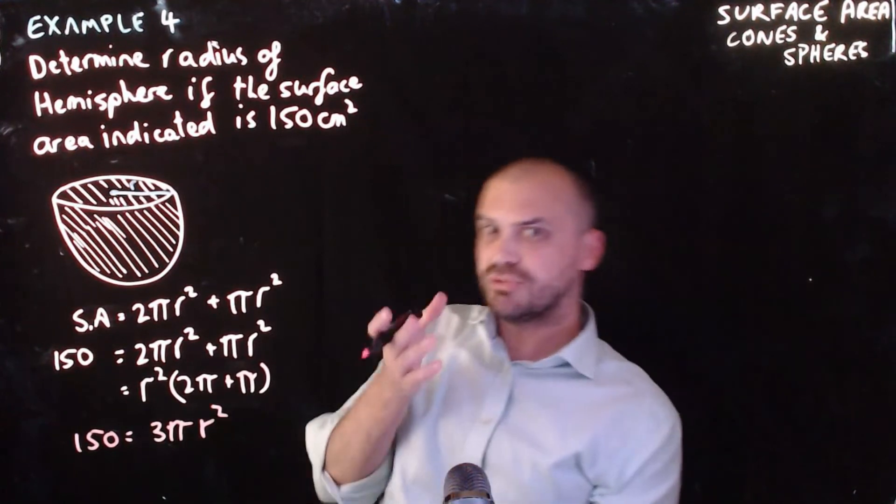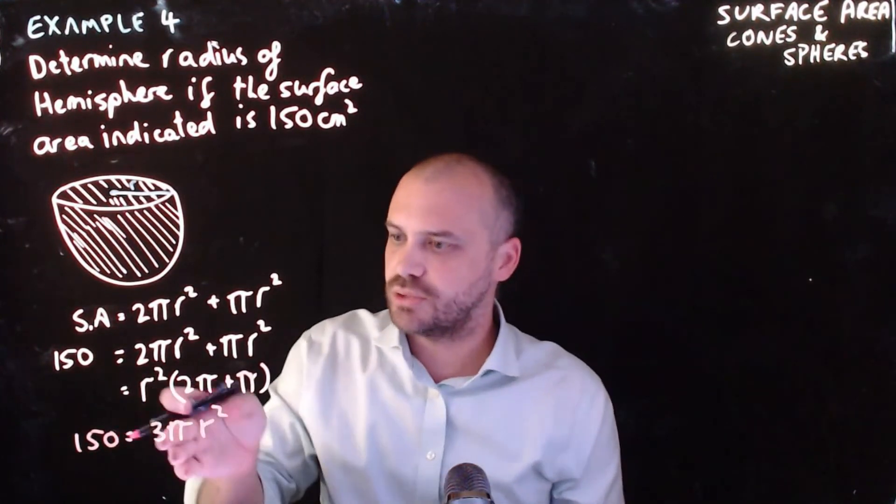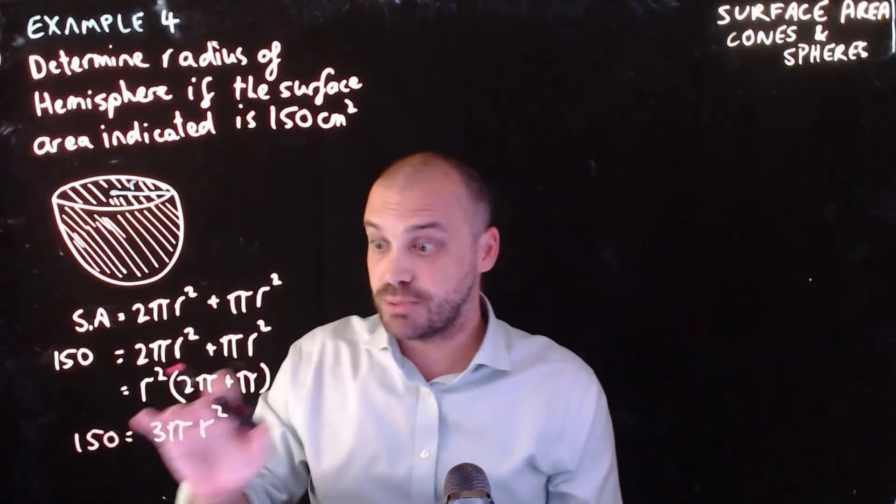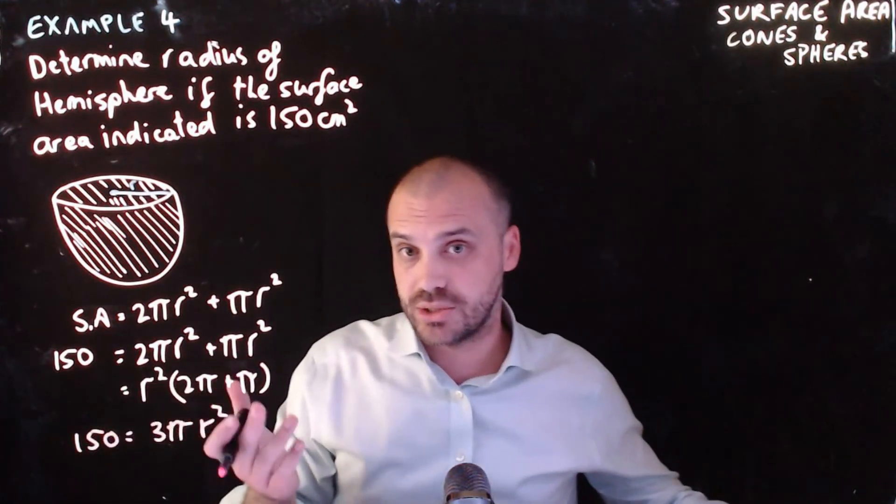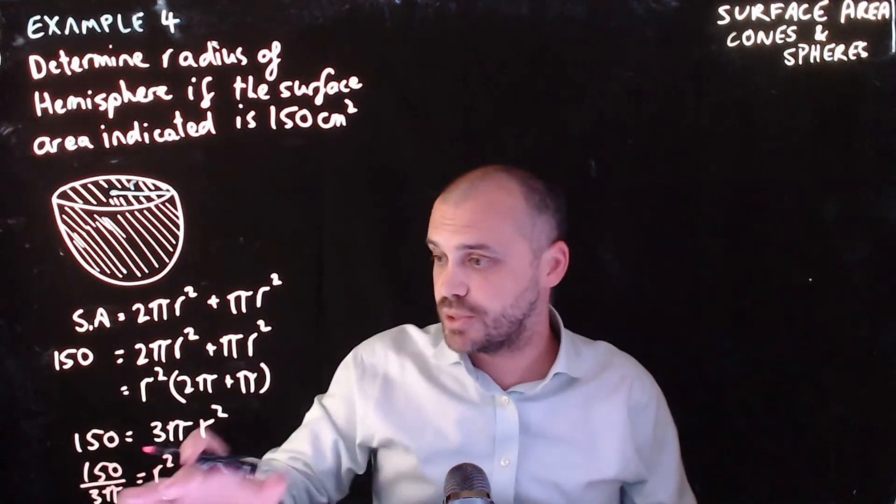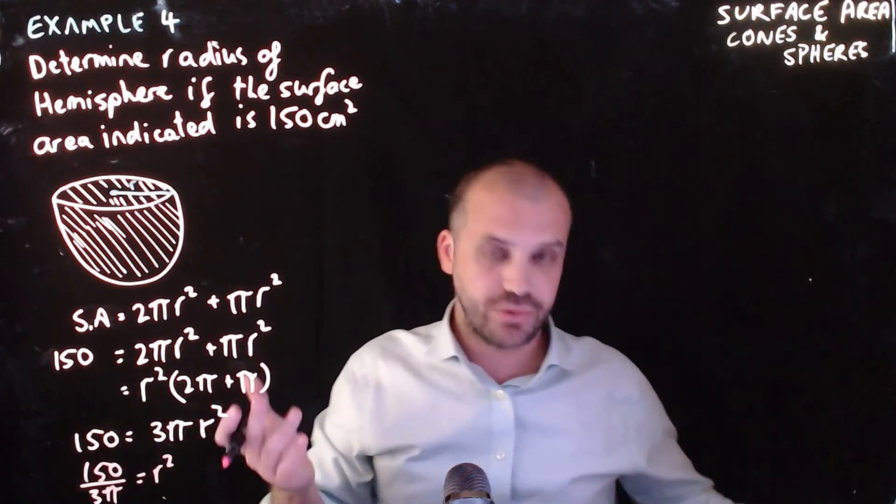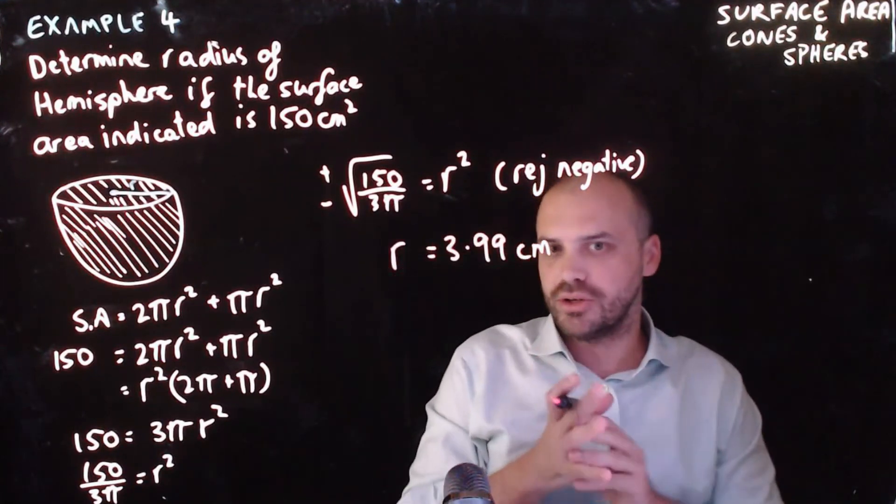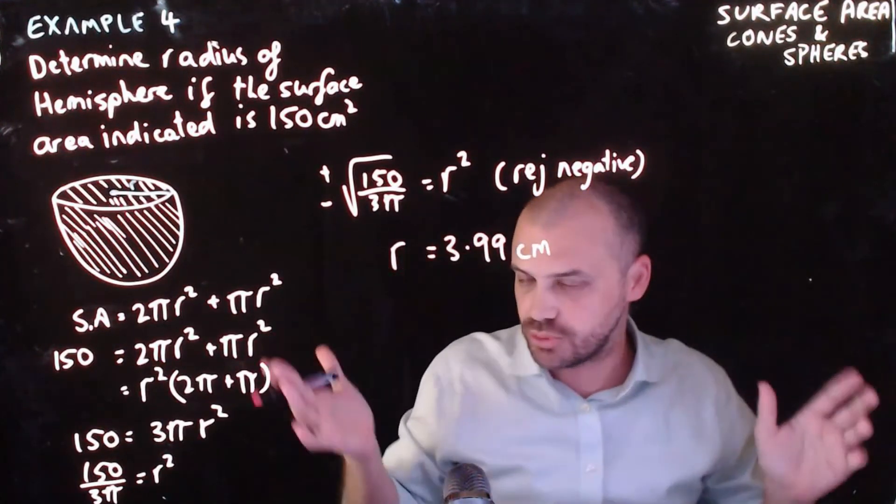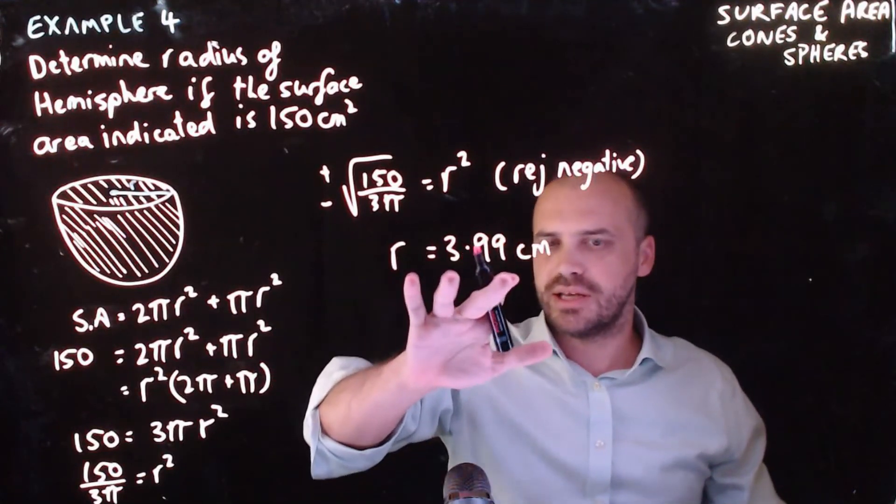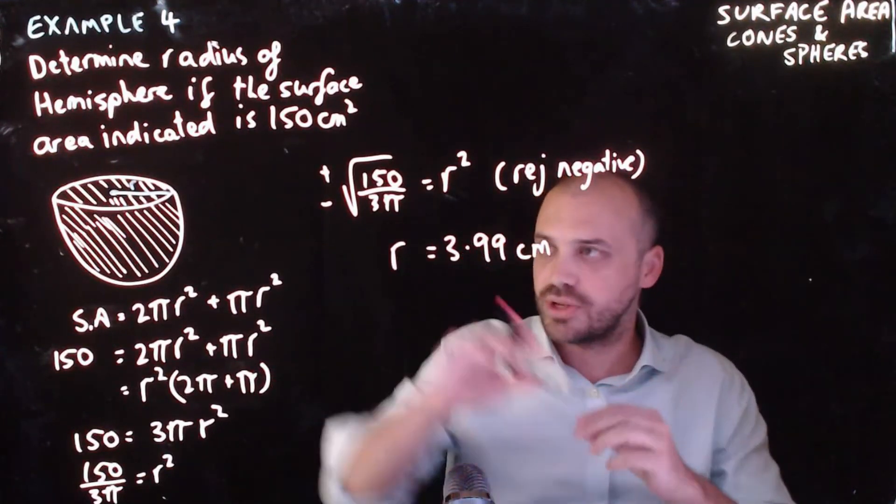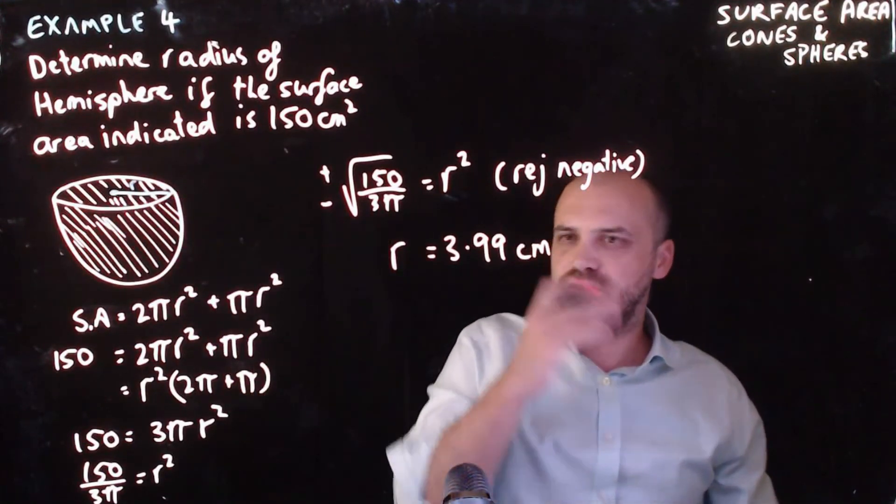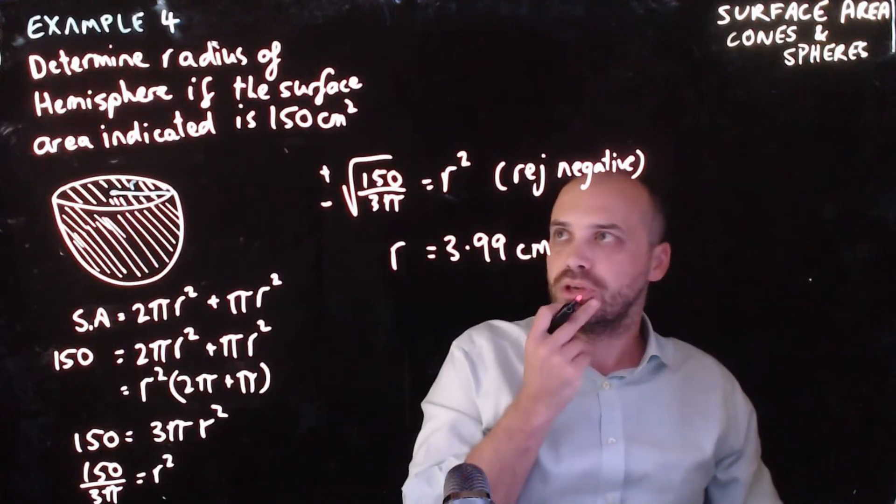All right. This looks relatively straightforward. I've got 150 equals 3 pi r squared. And now I can just divide both sides by 3 pi, and that'll leave me with r squared. And just like the previous question, I can square root both sides. And when you do that, you get an r value of 3.99 centimetres, of course, to two decimal places. That makes sense. That r value is slightly smaller than our previous example, using the same shape with no lid, which feels about right.